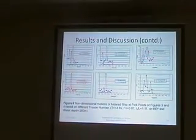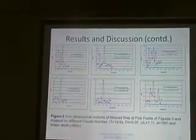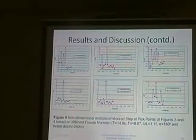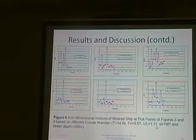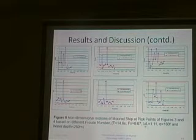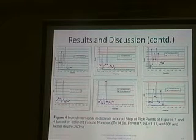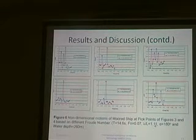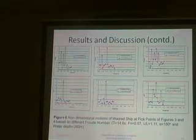From the above results, a summary result is plotted here for the critical point, termed as critical — that is, wavelength ratio 1.1 — for which the motion was significant.